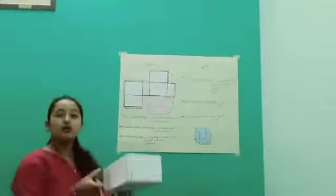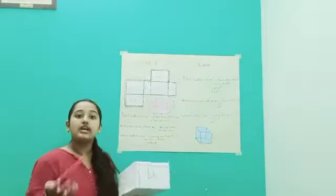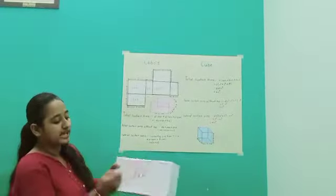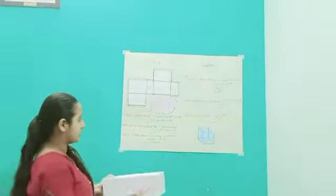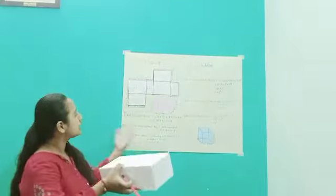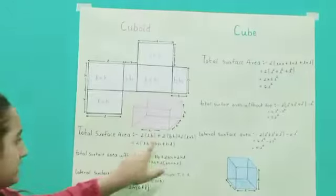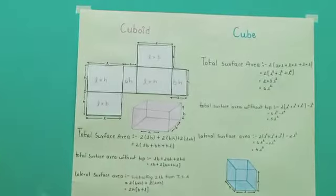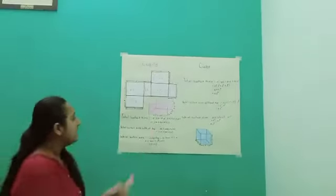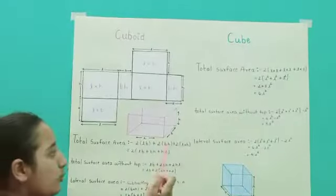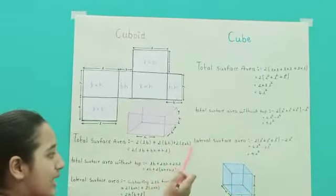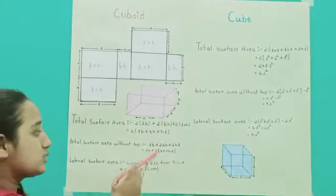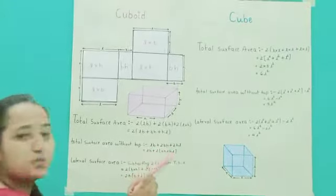Now, if we take out the total surface area of a cuboid without the top, we are going to remove one LB from the total surface area. Since we have 2LB, we subtract 1LB because we are just removing the top. So it will be LB plus 2BH plus 2LH, which simplifies to LB plus 2(BH plus HL).